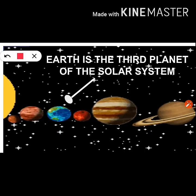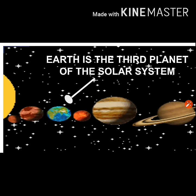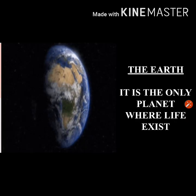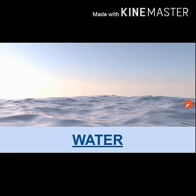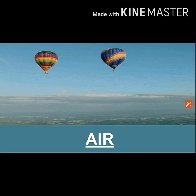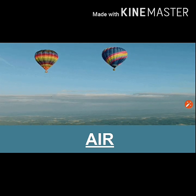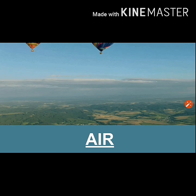As told in your last class, in our solar system there are a total of eight planets and our earth is one of them. Our earth is the third planet of the solar system. It is the only planet where you find life, and this is mainly because the earth has water, soil, and air. These three elements are very important for the existence of life.